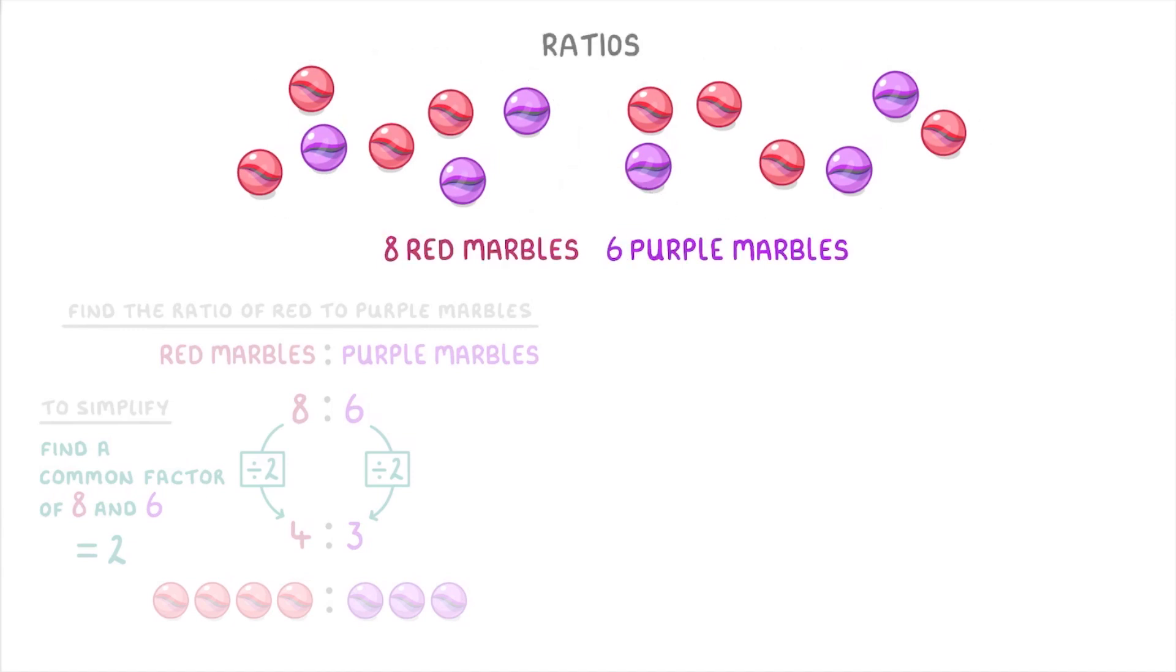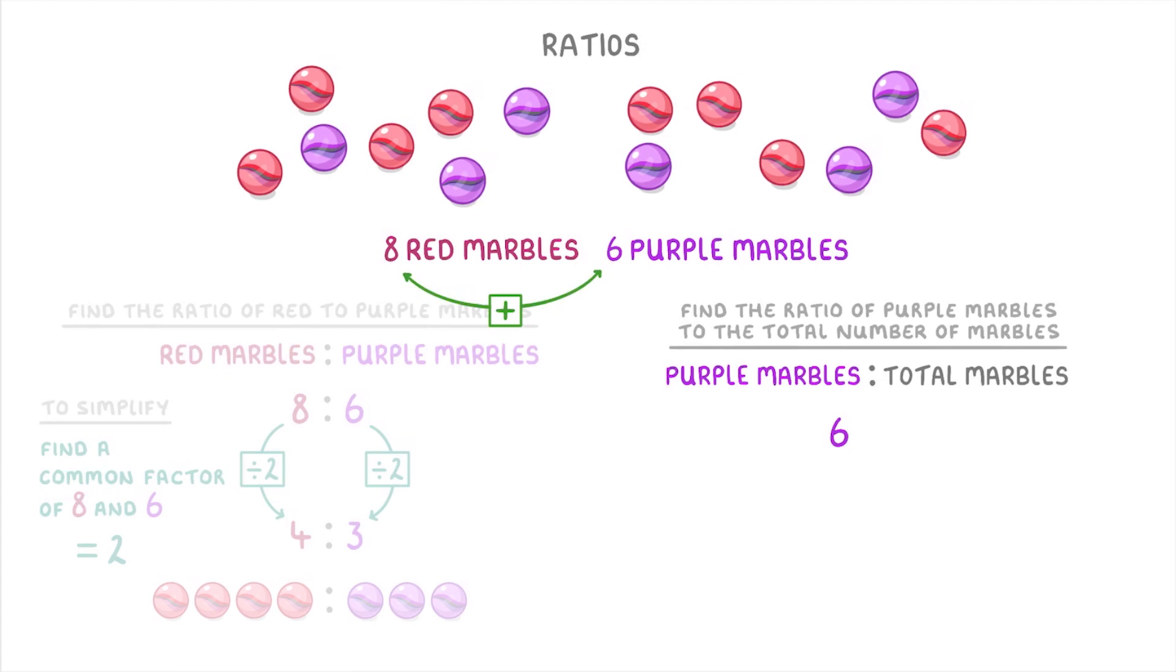Now we can also find the ratio between other things, like finding the ratio of purple marbles to the total number of marbles, which we can express as purple marbles to total marbles. So for this, all we need to do is find the number of purple marbles, which we know is 6, and then find the total number of marbles, which we can do either by counting up all of the marbles one by one, or adding together 8 and 6, which in either case will give us a total of 14 marbles. This tells us that the ratio of purple marbles to total marbles is 6 to 14, which we can then simplify by dividing both sides by 2 to get a simplified ratio of 3 to 7.